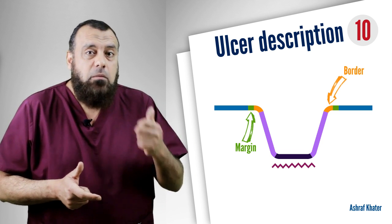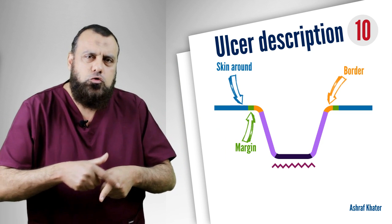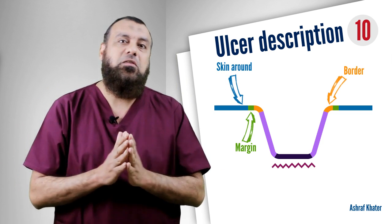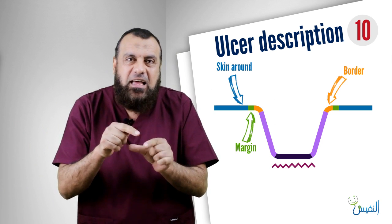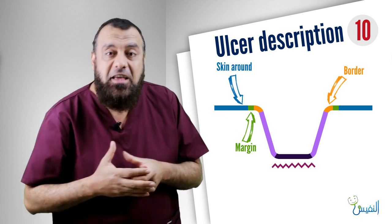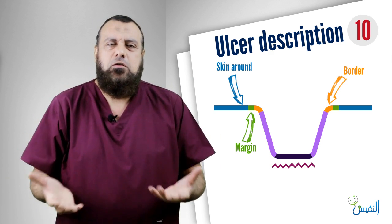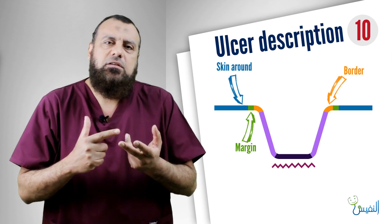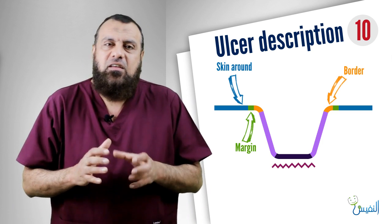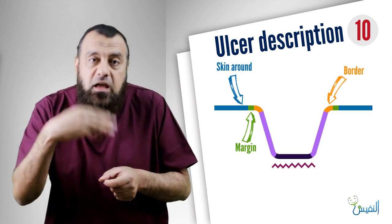The third item is the skin around the ulcer, which is different from the margin. The margin is one to two millimeters around the border, but the skin around is away from the margin — further out. The best example is the varicose ulcer: the skin around it is usually pigmented, with dermatosclerosis, sclerosed, pigmented, loss of hair, and atrophied.